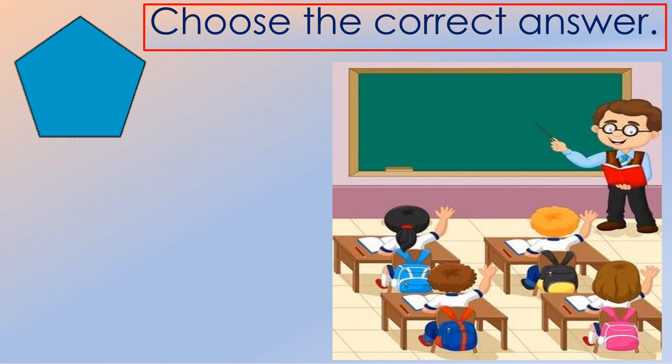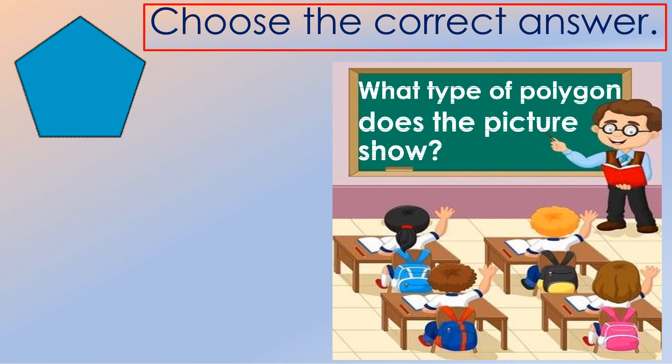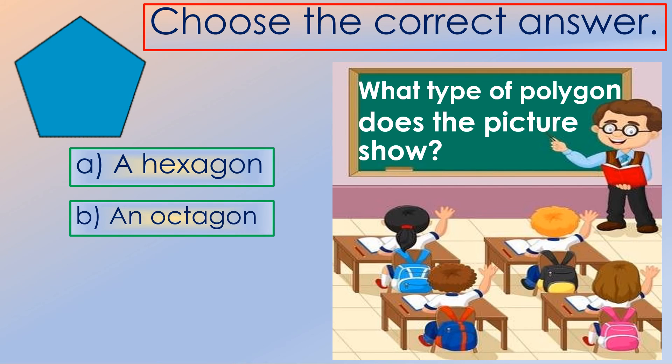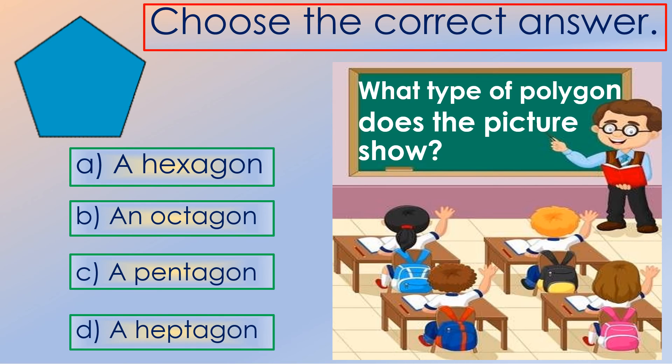Down to our last question. What type of polygon does the picture show? A, a hexagon. B, an octagon. C, a pentagon. Or D, a heptagon. So for the correct answer, the picture is a pentagon. That is letter C.